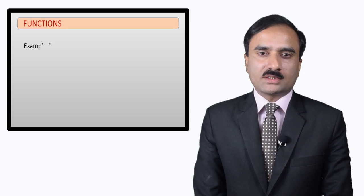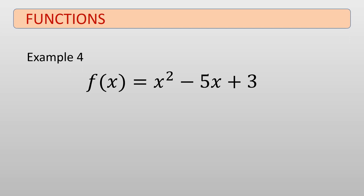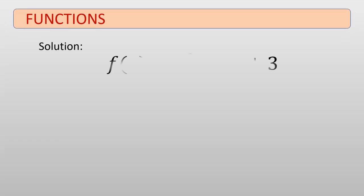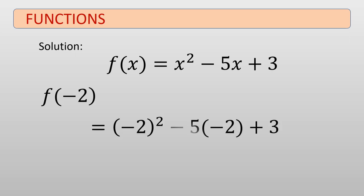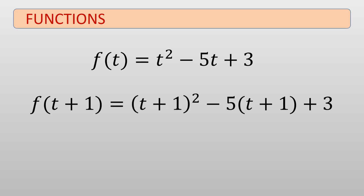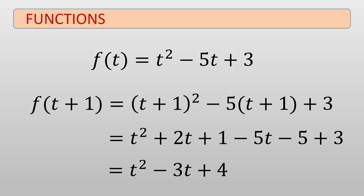To practice a little bit more, let's do another quick example. Given g of x equals x squared minus 5x plus 3, evaluate f of negative 2, f of t, f of t plus 1, and f of x squared. To evaluate f of negative 2, we plug negative 2 in place of x to get negative 2 squared minus 5 times negative 2 plus 3, which equals 17. Putting t in place of x gives f of t equals t squared minus 5t plus 3. And f of t plus 1 equals t plus 1 squared minus 5 times t plus 1 plus 3, which simplifies to t squared minus 3t plus 4.